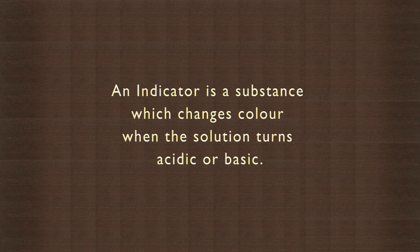Just a reminder that an indicator is a substance which changes color when the solution turns acidic or basic. Litmus paper, methyl orange, phenolphthalein, and turmeric are examples of indicators.